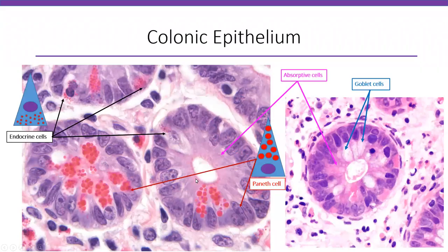On this high-power image you can again see goblet cells — the mucin-filled cells with nuclei at the base — and absorptive cells in between as the pink cells. Paneth cells are the cells with chunky granules located towards the apex, towards the lumen. Endocrine cells have tiny granules towards the base, with the nucleus on top.